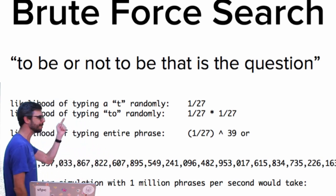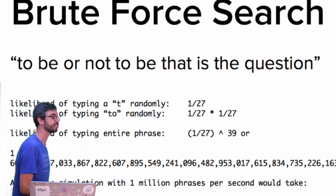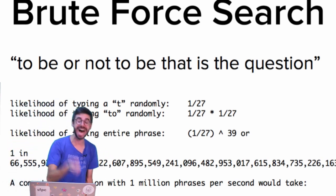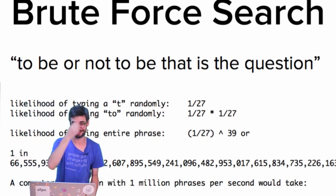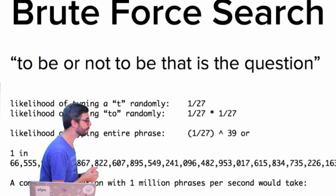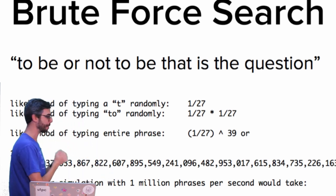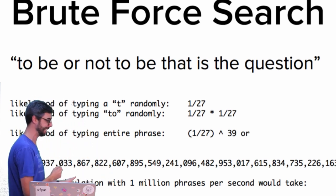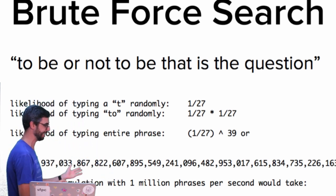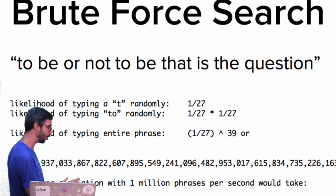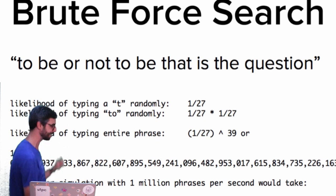The phrase 'to be or not to be, that is the question' has 39 characters in it. So the probability of typing T, then O, then space, then B, then E, then space, then O, then R, then space, then N, then O, then T — all in sequence — is one divided by 27 to the 39th power.